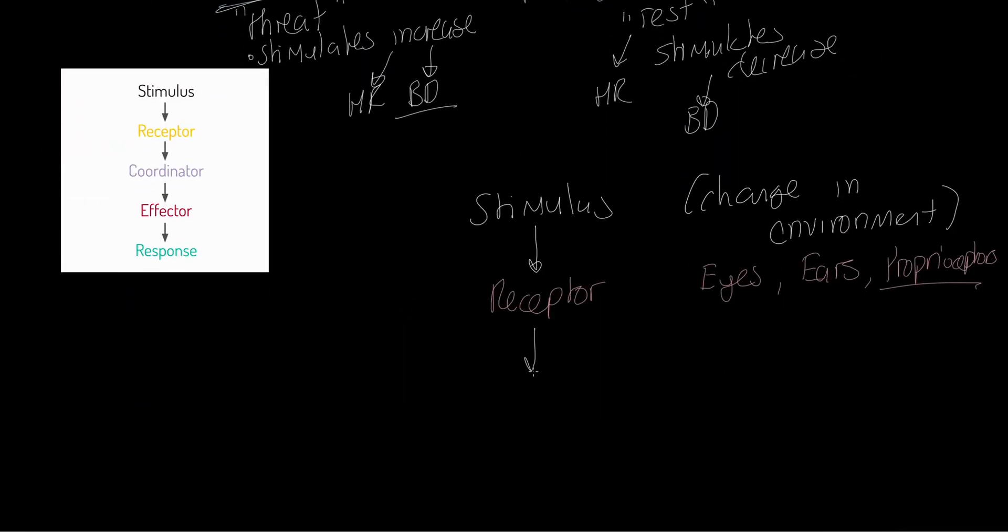What that then leads to, if we go down further, that then leads to a coordinator. Now, this is exactly where we come back to our nervous system. The coordinator is the brain and or the spinal cord. So the coordinator, as you can see here, is going to effect a response. It is effectively the decision maker, the executive, that's going to bring about some kind of response to what's going on.